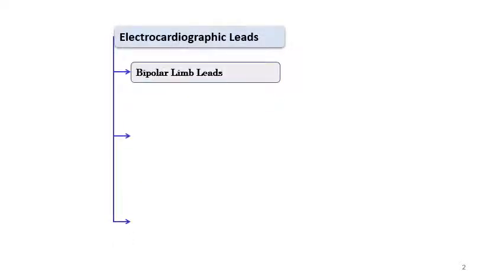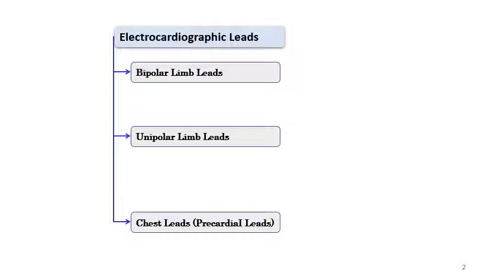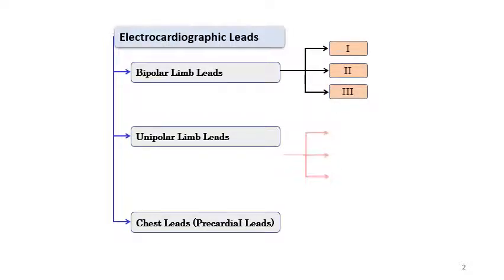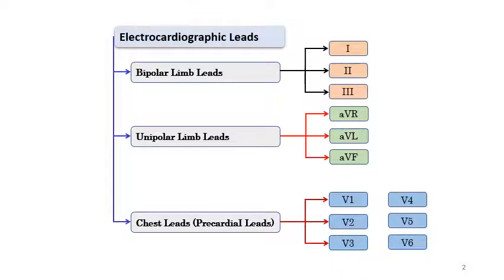Electrocardiographic leads are bipolar limb leads, which are three, and there are unipolar limb leads, which are also three, and we have chest leads, which can also be called precordial leads. The bipolar limb leads are one, two, and three. Unipolar limb leads are also three: augmented VR, augmented VL, and augmented VF. And then we have chest leads, which are six from V1 through V6.